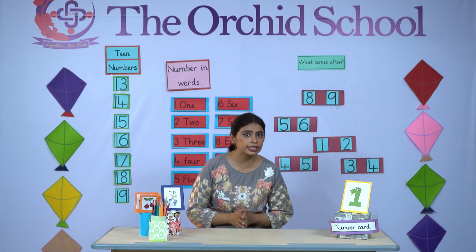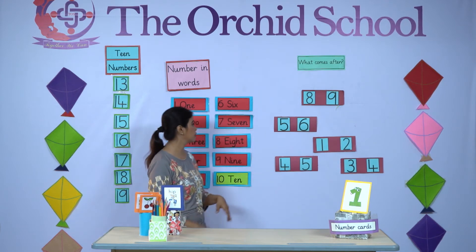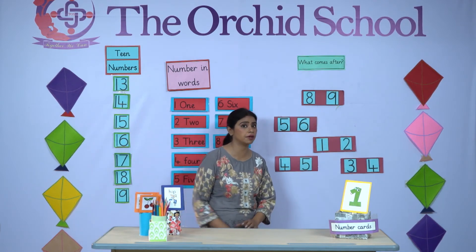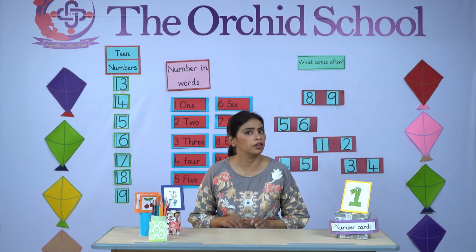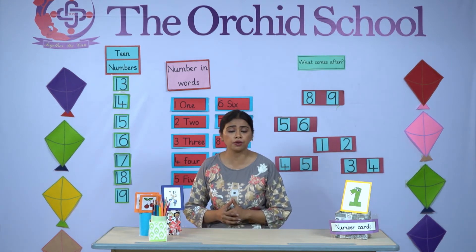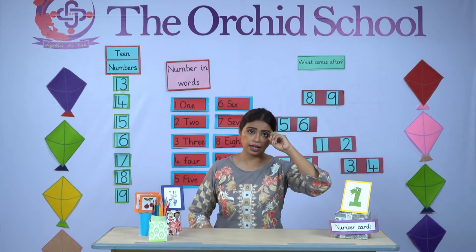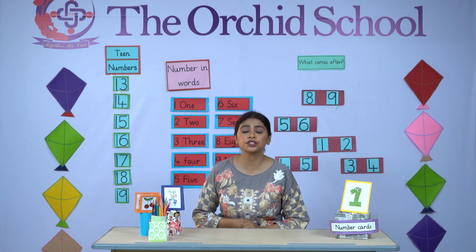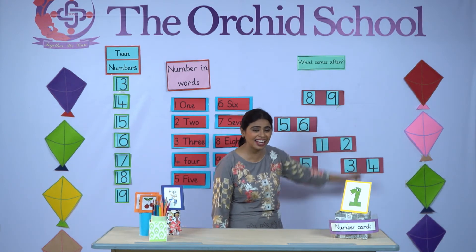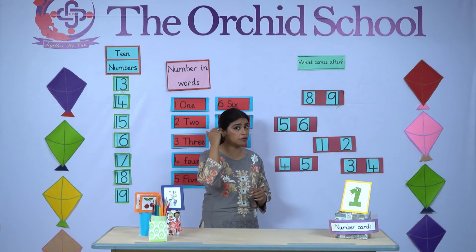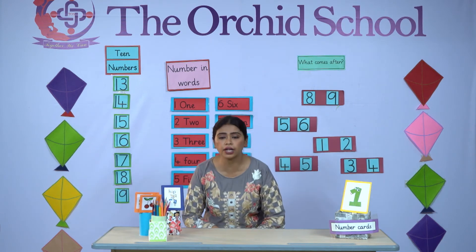So are you ready? Let's start. First of all, I am going to do it, and then I will ask you. We are starting with number 8. What comes after number 8? You have to keep number 8 in your mind and count: 9. Start counting: 1, 2, 3, 4, 5, 6, 7, 8 — then 9. So what comes after 8? Number 9 comes after 8.